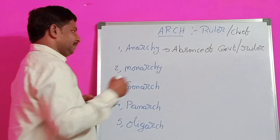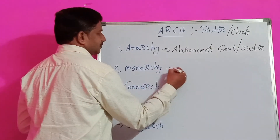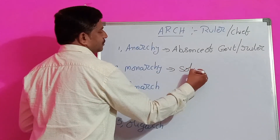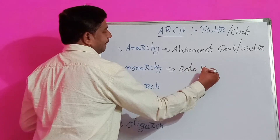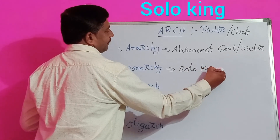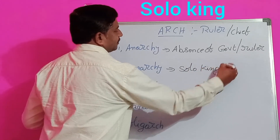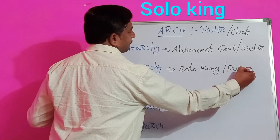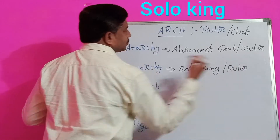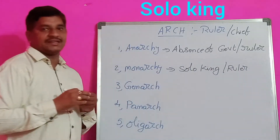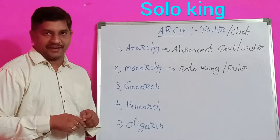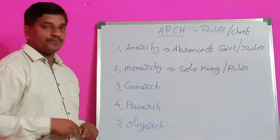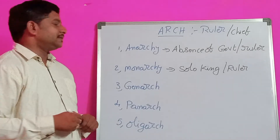Monarchy. Solo king or ruler — only one person rules the entire government. That is called Monarchy.